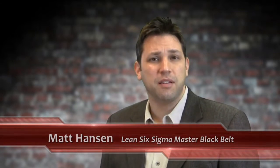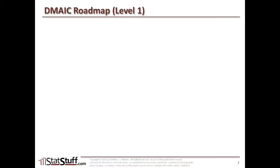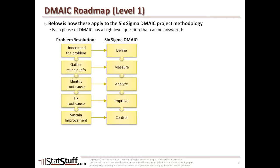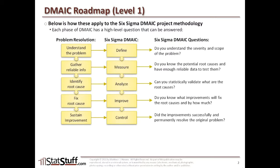Let's begin by looking again at the five basic steps for resolving a problem. As we talked about previously, we introduced the five basic steps for resolving a problem, and then we applied those five basic steps to the DMAIC methodology — the five phases of the Six Sigma DMAIC methodology. Last time in the lesson, we had also talked about the high-level questions we would ask for each of those phases in the DMAIC methodology.